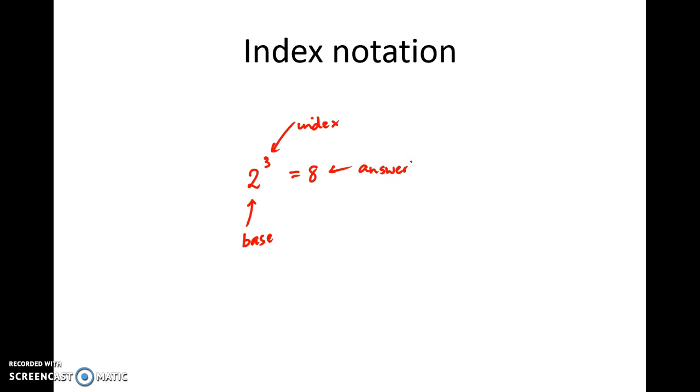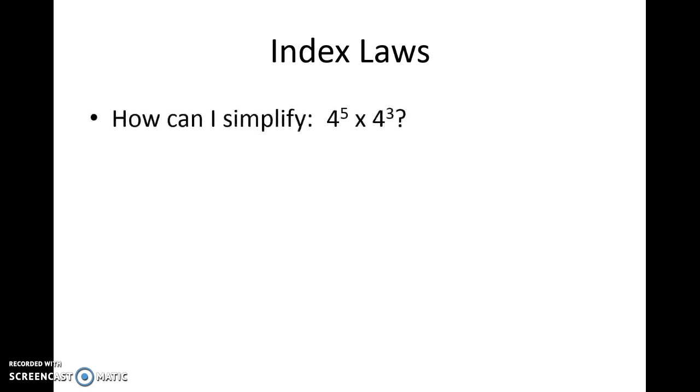So keeping that in mind, let's press on to the next slide where we look at our first index law. Imagine that we wanted to simplify 4 to the power 5 times 4 to the power 3. We might recognize that 4 to the power 5 is simply 4 times itself 5 times, and 4 cubed is simply 4 by itself 3 times. By counting up the 4's, you can see that there are 8 of them. So we have 4 to the power 8.